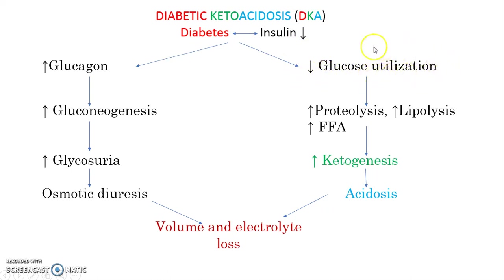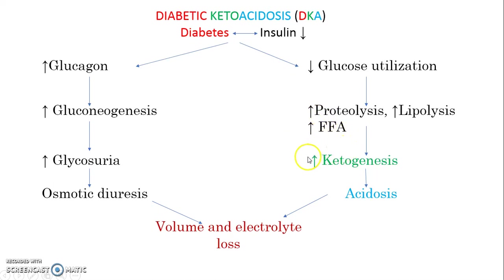For cellular function, the energy which the cell gets is mostly from increased proteolysis and lipolysis. Because of this, there is more fatty acid production and, as a byproduct, there is more ketone body formation — leading to increased ketogenesis.